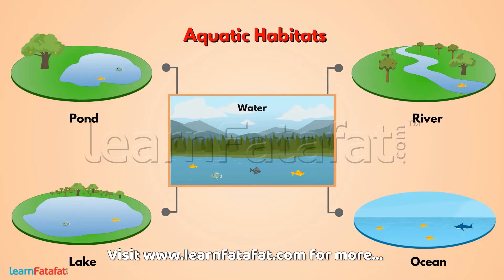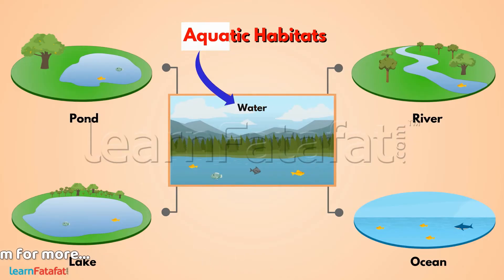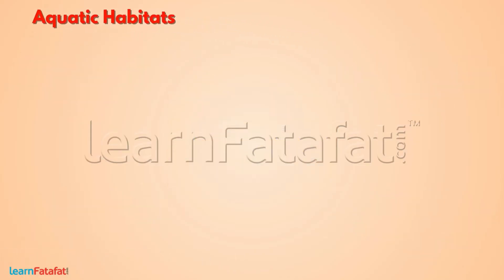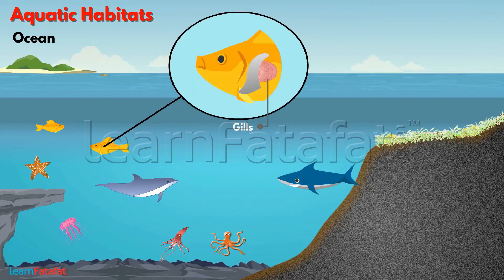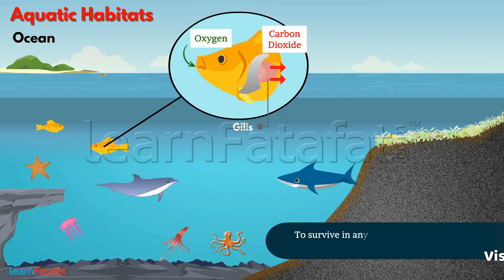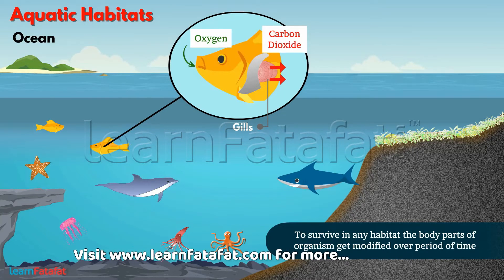Don't get confused with the term aqua — it means water. Let's learn about some of the aquatic habitats on earth. Oceans are the place of living for many animals. Most ocean animals have gills or similar structures which help them to breathe in water. To survive in any habitat, the body parts of organisms get modified over a period of time. This is called adaptation.